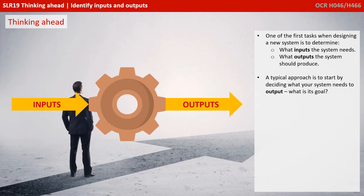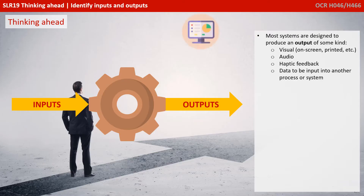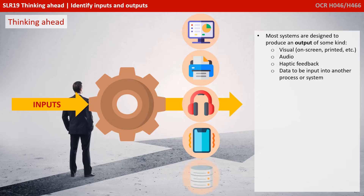A typical approach is to start by deciding what your system needs to output — what is its goal? Most systems are designed to produce an output of some kind, whether it be visual on-screen, printed in a physical format, audio, some form of haptic feedback, or data to be input into another process or system.